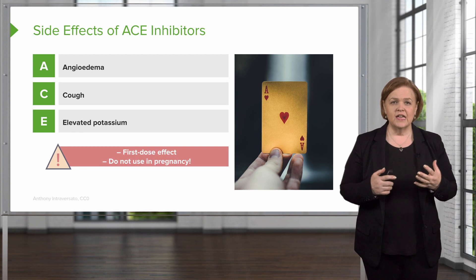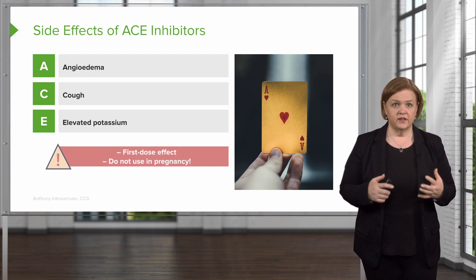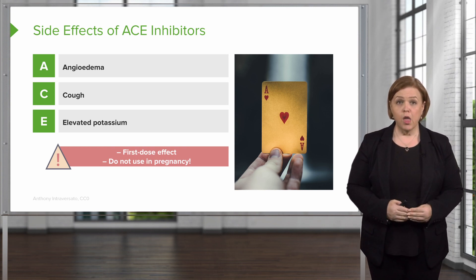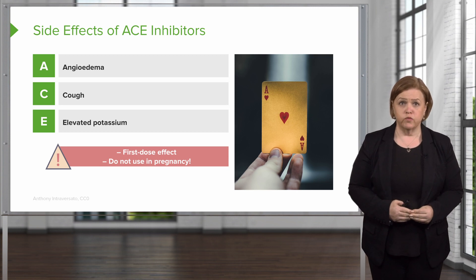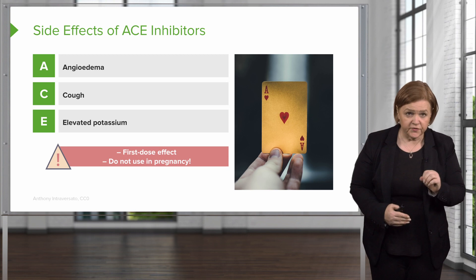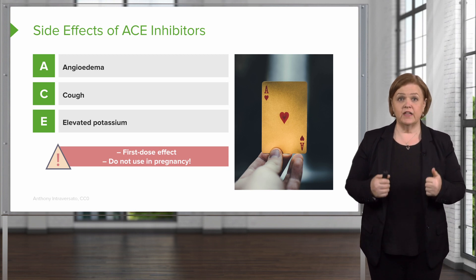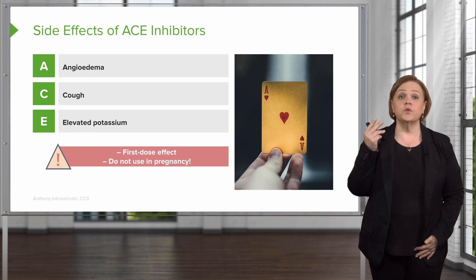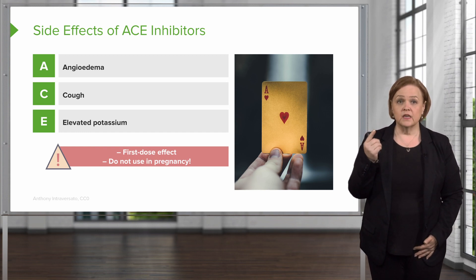ACE inhibitors have a lot of side effects, but these are the ones I want you to remember. A is for angioedema — angioedema means that your mucous membranes are all swollen and you're not going to be able to breathe. So A for angioedema is a bad deal. C is for cough and E is for elevated potassium. Those are the three side effects I want you to know for ACE inhibitors.